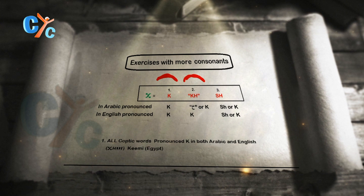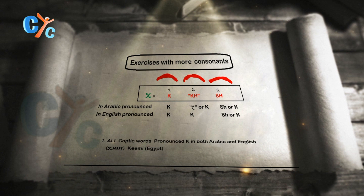But it is not in English — they don't have this Kh sound. The last way to pronounce it is the Sh sound, which is present in almost all languages. So let's start with the first way to pronounce it, which is K. I said that any word of Egyptian origin, not borrowed from some other language, this letter is always pronounced K.